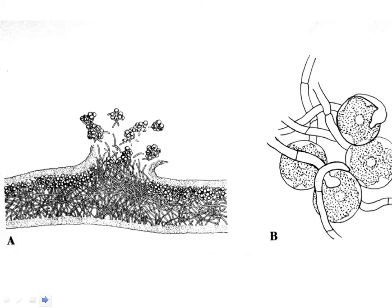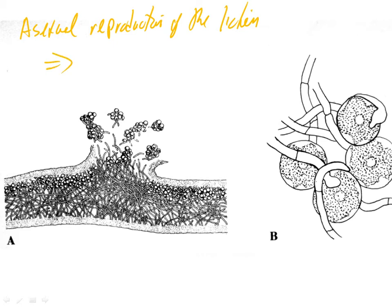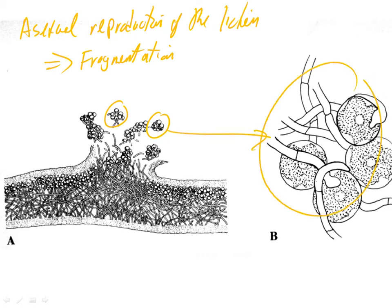There can be asexual reproduction of the whole lichen, and this is essentially by a kind of fragmentation. There is a special kind of fragmentation where little bits of lichen — that is, little bits of fungus with associated parts of algae — can get broken out of the lichen. These little bits are called soredia. Soredia means heap — so a little heap of lichen, a little bit of fungus with alga.